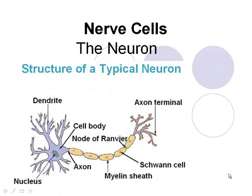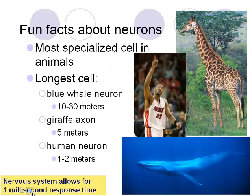Welcome back. We're still in the nervous system, but now we're moving on to the neuron — the nerve cell. This is what allows us to conduct nerve impulses and respond to stimuli. The neuron has three parts: a dendrite, a cell body, and an axon.